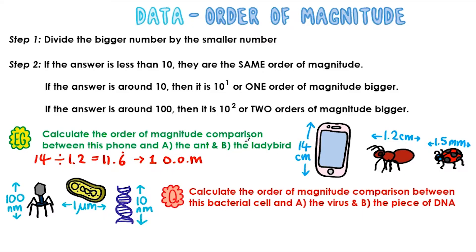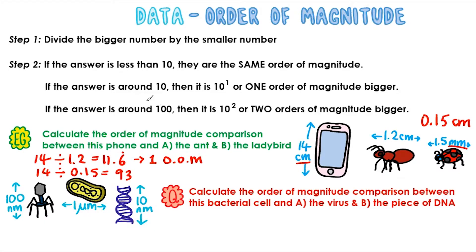Next, we're going to compare it to the ladybird. When we do a comparison, remember that we have to make sure the units are the same. This ladybird is in millimetres, so we need to turn them into the same units. Let's turn 1.5 millimetres into centimetres — all we're going to do is divide by 10, which gives us 0.15 centimetres. So we're going to do 14 divided by 0.15, and this time we get 93. That number is pretty close to 100, so this time it is two orders of magnitude bigger.